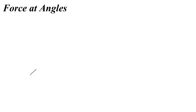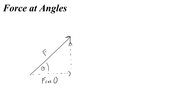In this video, we're going to talk about forces at angles. Whenever you have a force at an angle, you are going to find its x and its y components by making a right triangle and taking a look at which side is adjacent and which side is opposite. Typically, the x component or the horizontal component will be adjacent, so we use cosine, and the opposite is sine.